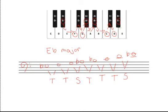And finally, we go up a semitone from a D back to an E-flat, the very note we started on. So there is our E-flat major scale built using tones and semitones.